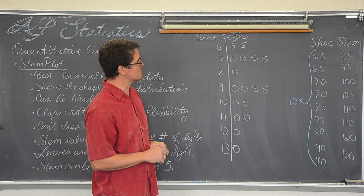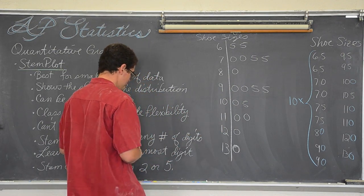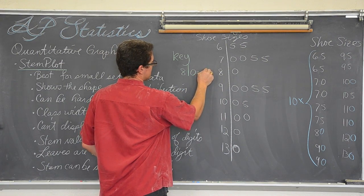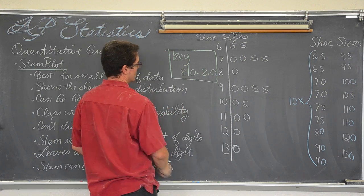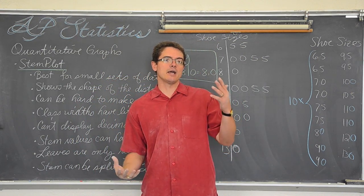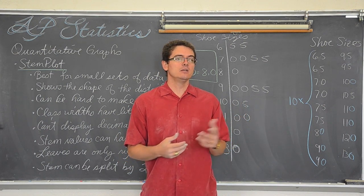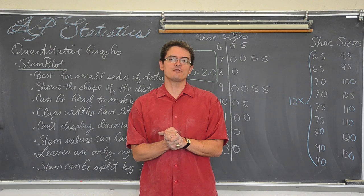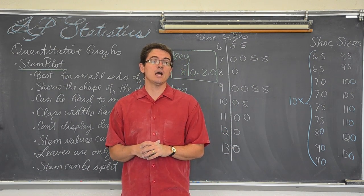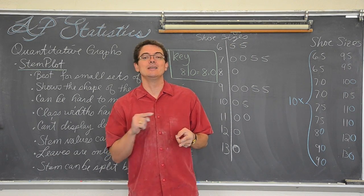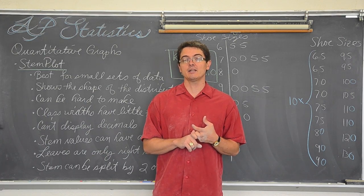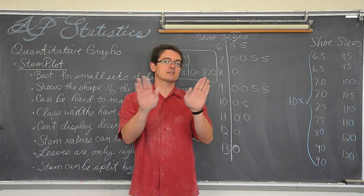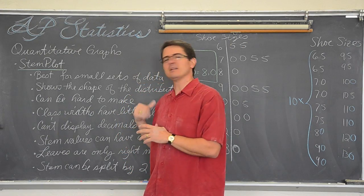So we have a stem plot showing the distribution of shoe sizes. With the graph you do need a key: 8 | 0 represents a shoe size of 8.0. If your data has a very wide range — maybe the smallest number is 20 and the highest is 540 — you might need to drop the ones digits and just look at the hundreds and tens place. Stem plots can be a real challenge, which is why we prefer histograms. But don't skip stem plots in your book — stem plots show shape, they show data, they are very good for small sets of data, and they are good in a back-to-back design for comparing distributions. Let's move on to histograms!